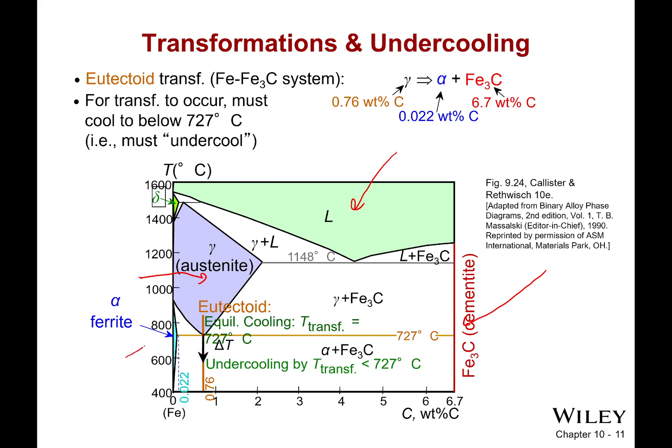Now over here on the far left I have ferrite. So with ferrite, what I have there is that this is more or less just pure iron. It'll be body-centered cubic, and any carbon I have is going to be just an impurity.